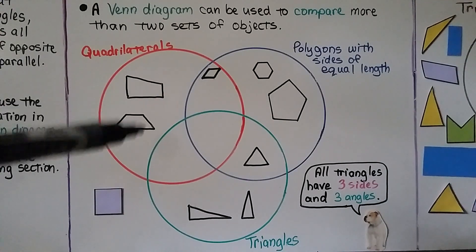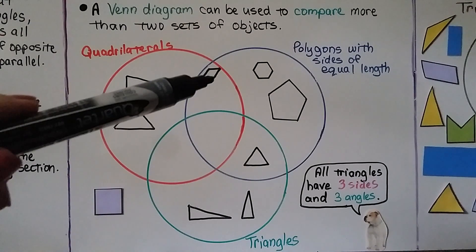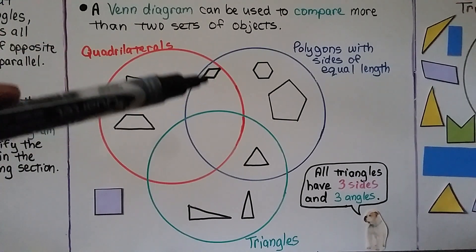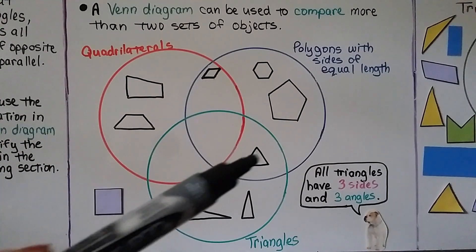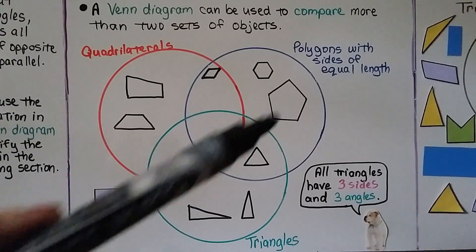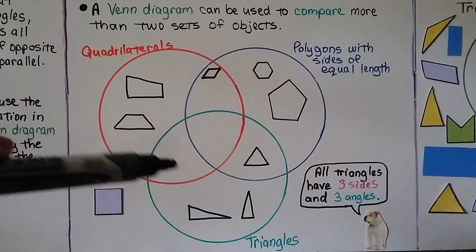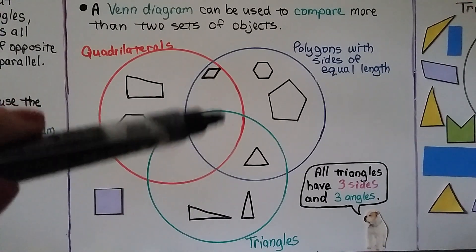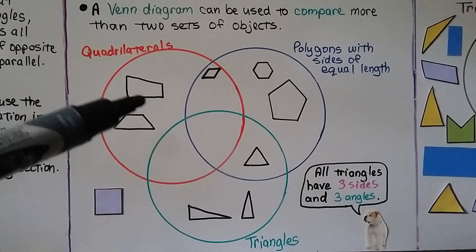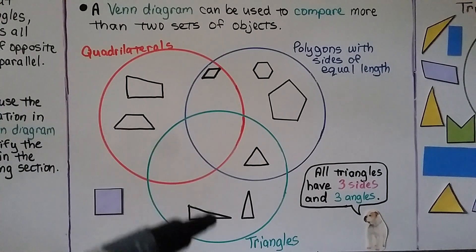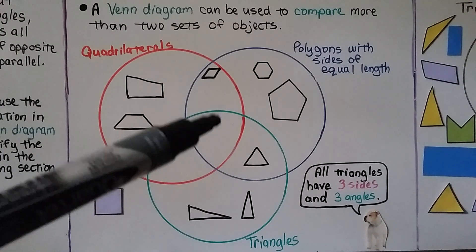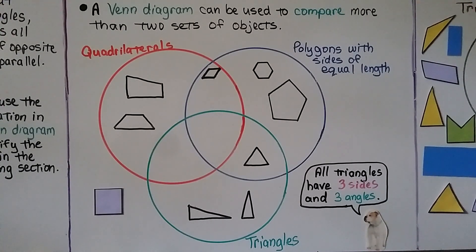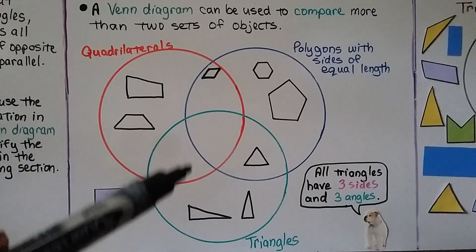These are quadrilaterals. That's a quadrilateral, and it has sides of equal length, so it's in the overlapping section. These have sides of equal length, and this triangle has sides of equal length, so it's in the overlap of triangles and polygons with sides of equal length. There's nothing in the overlap between triangles and quadrilaterals because a triangle and a quadrilateral are two different polygons — it would have to have three sides and four sides at the same time, which is impossible. That's why that section is empty.